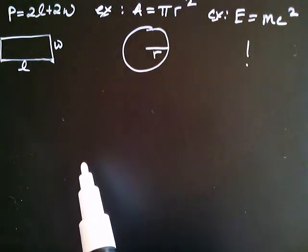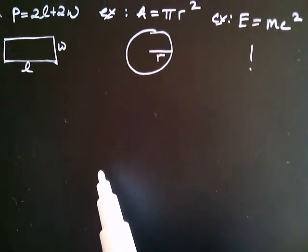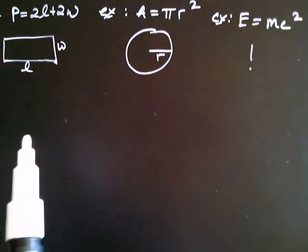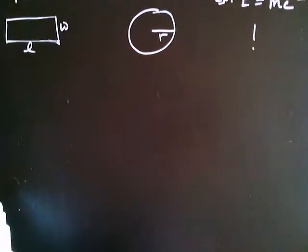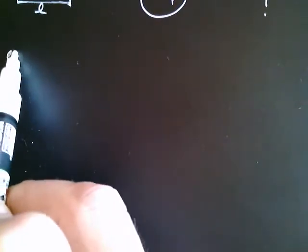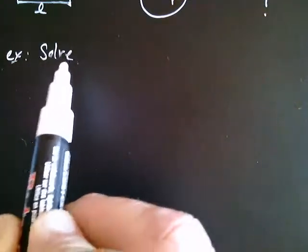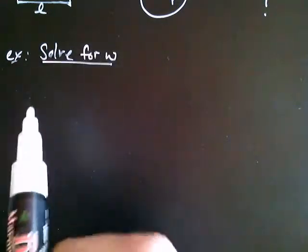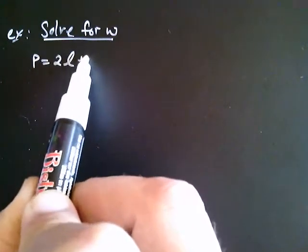Okay, so in this video we're going to talk about how to take a formula and solve that formula for one of the variables in the formula. So for example, let's take this formula and let's solve it for W. Okay, let's write down what we're doing here. So let's go ahead and solve for W.